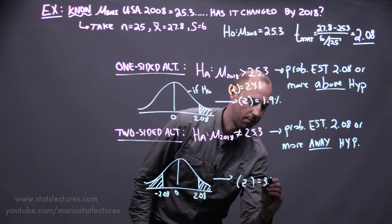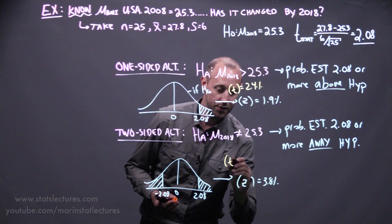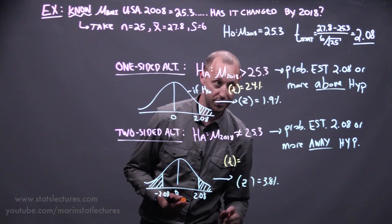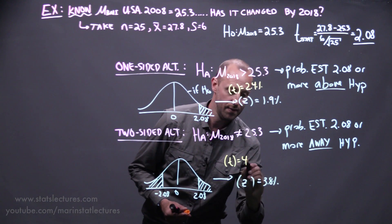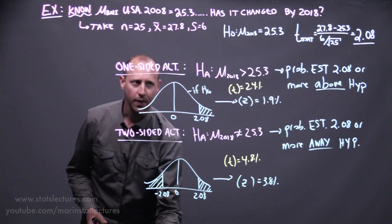Again, if you use the technically correct way of using the t-distribution, you're going to get a p-value of 4.8 percent.